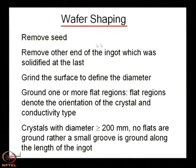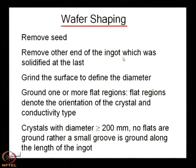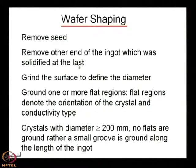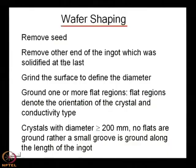The steps for wafer shaping are: first, remove the seed, because all crystals start from a seed. Second, remove the other end of the ingot which was solidified last. Why? Because the concentration of impurity in that tail region will be higher as you grow from the seed region toward the tail region successively, so you must remove it.